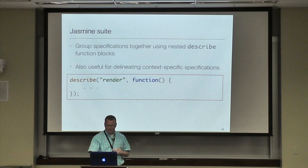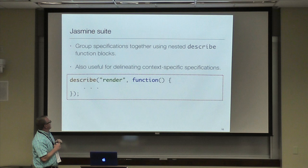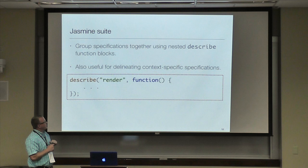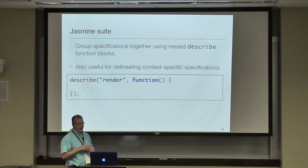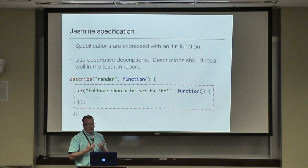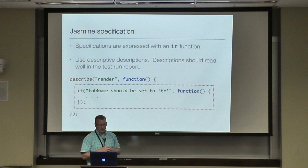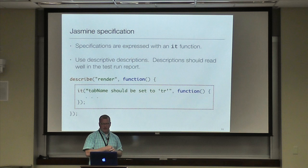The very top of a Jasmine test suite is the describe block. It takes a string describing what that block is describing, and then it takes a function. You can nest these describe blocks to get more context and build context-specific specifications. Within that describe block, you can have more describe blocks or you can have specifications detailed with an `it` function, which has a string description and then takes a function.